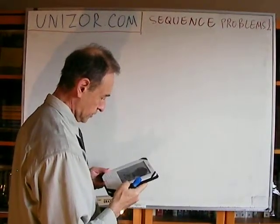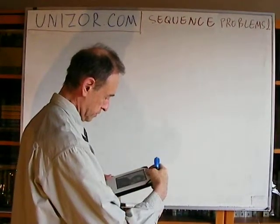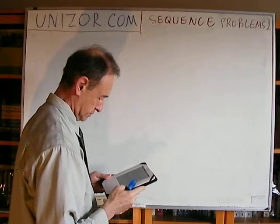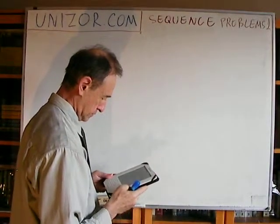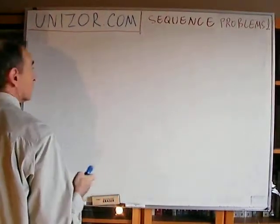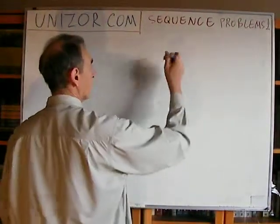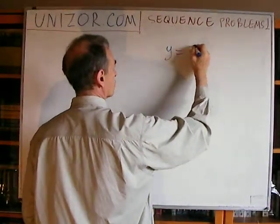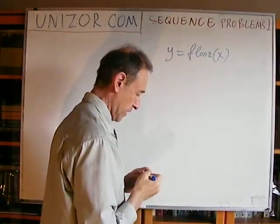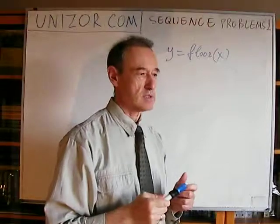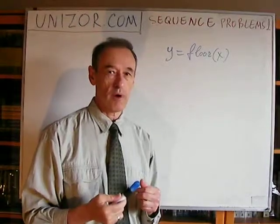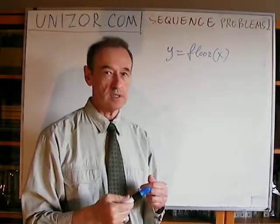Next, let's introduce a function for any real argument: floor of x. What is floor of x? Floor of x is, for any x, the largest integer number which does not exceed x. So for one half, the largest integer which does not exceed one half is zero, right? One already exceeds it, so it's zero.